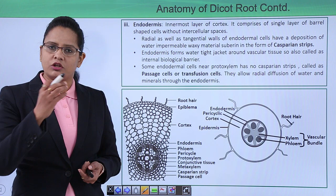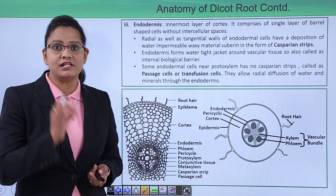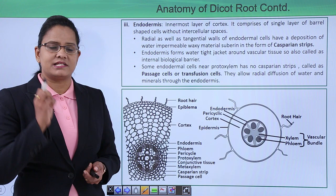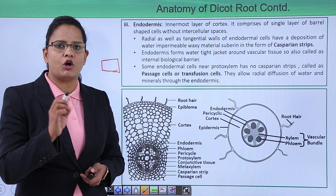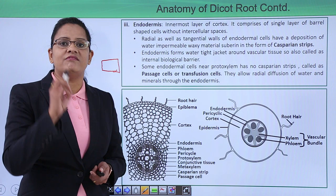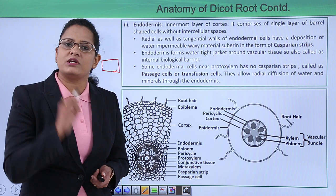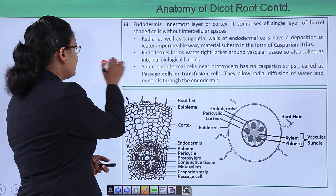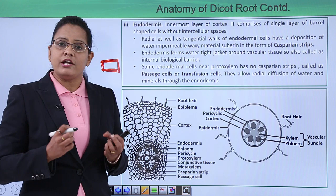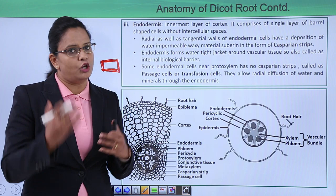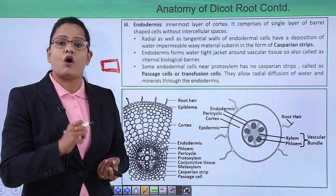The next layer is the endodermis, the innermost layer of the cortex, beyond which the stele or main vascular tissue begins. It is made up of barrel-shaped cells with no intercellular spaces. The radial and tangential walls of the endodermis are surrounded with an impermeable waxy substance called suberin, and this layer is called the Casparian strip. Because of the Casparian strips, the endodermis acts like a watertight jacket, preventing loss of water from the cortical layers.